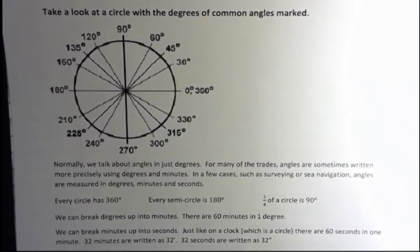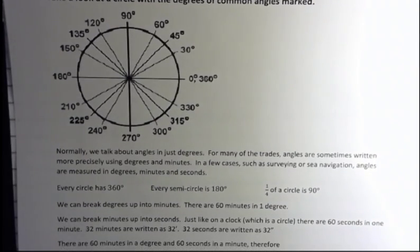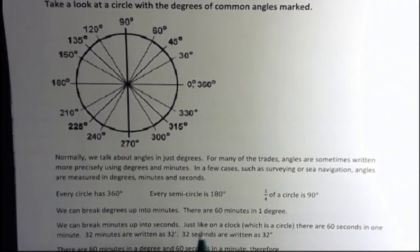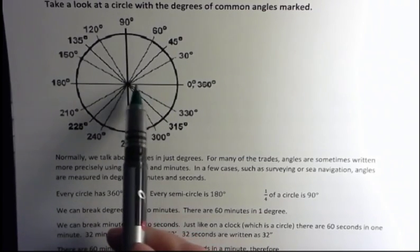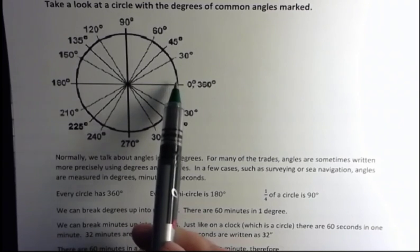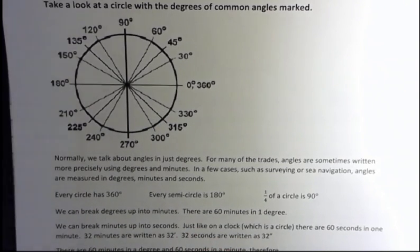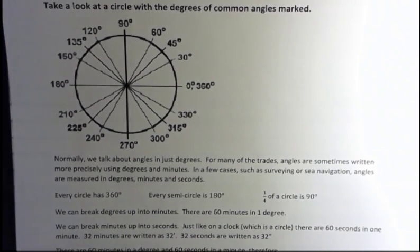But you can break degrees up into minutes. There are 60 minutes in one degree. So one degree would be a little tiny thing. So one degree is small, but there's 60 minutes in there. So that becomes much more precise when you talk about it with the minutes.